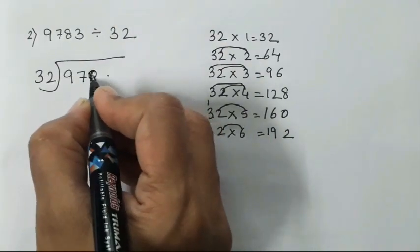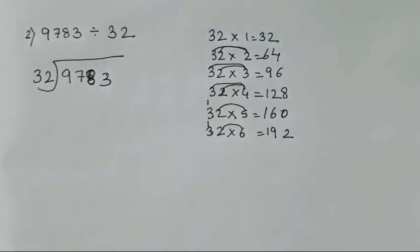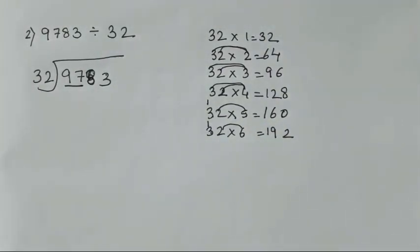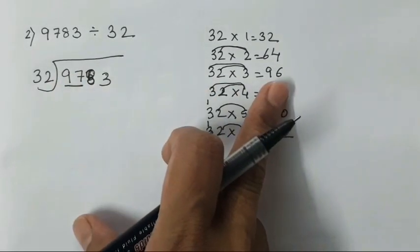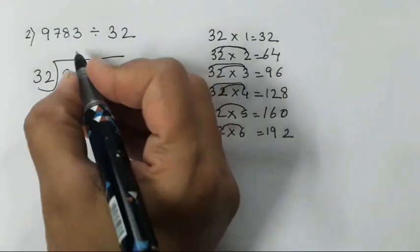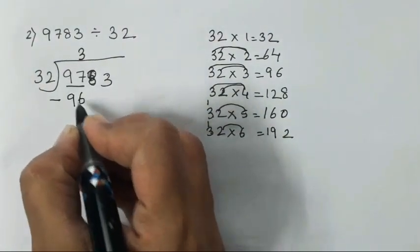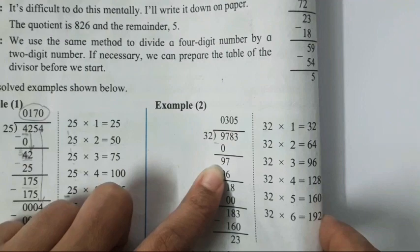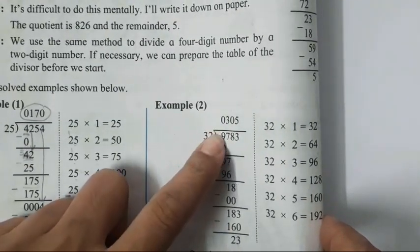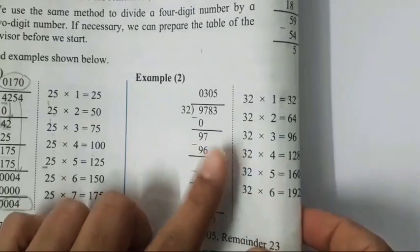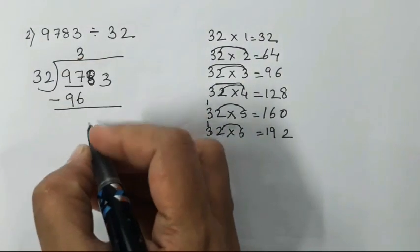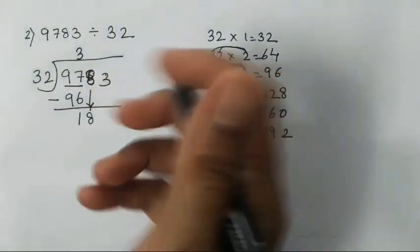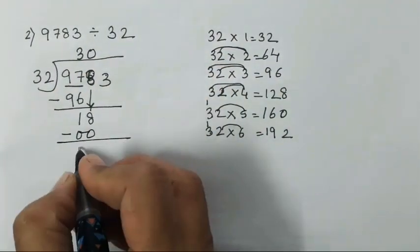Now we divide. Since the divisor has two digits, we take two digits at a time. You can either write 32 zeros are 0 and carry down step by step, or directly take two digits — both methods work. For 97, the closest number in the table is 96, which is 32 times 3. So the first quotient digit is 3. Subtract: 97 minus 96 is 1, bring down 8, giving 18.